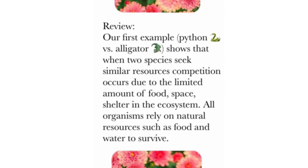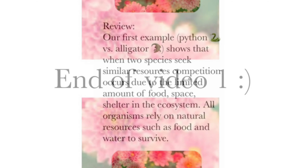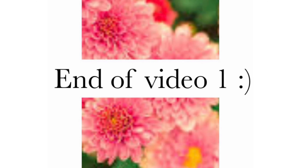Review: Our first example shows that when two species seek similar resources, competition occurs due to the limited amount of food, space, and shelter in the ecosystem. All organisms rely on natural resources such as food and water to survive. That was the end of video 1.